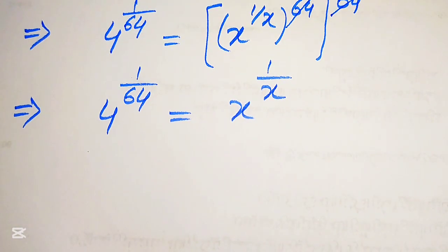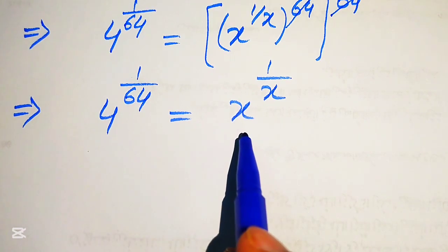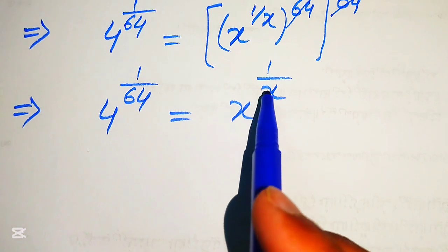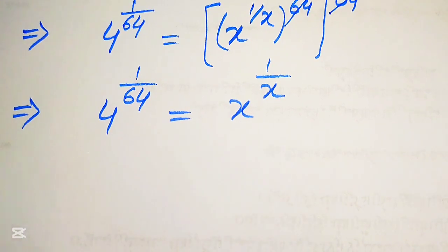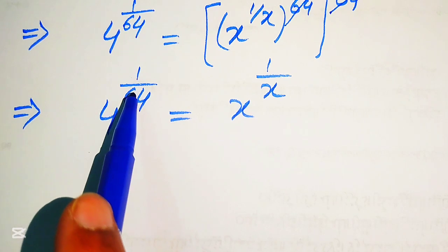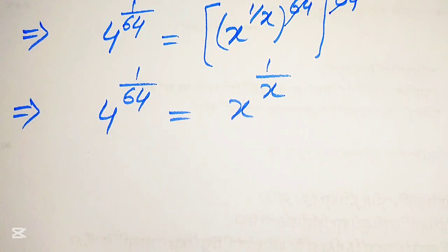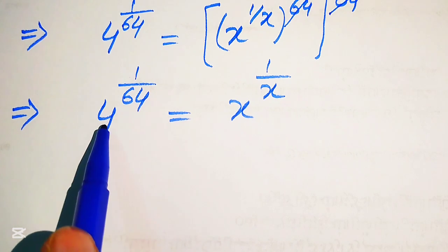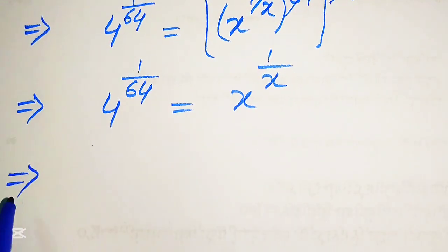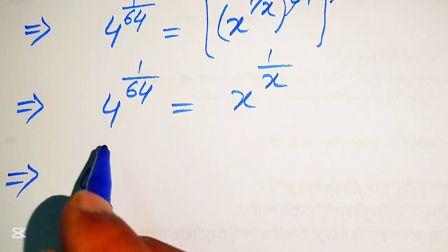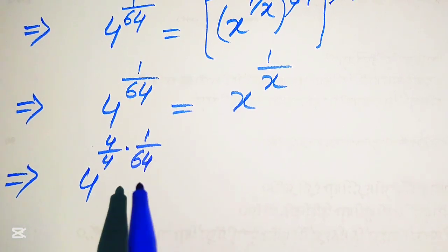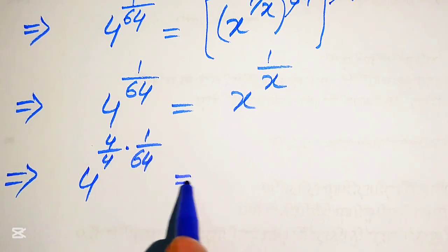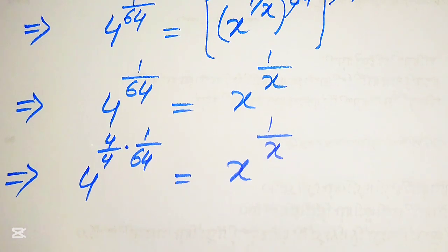Since we are solving for x, we notice that on the right hand side the exponent of the term is the reciprocal of its base. We need to make the same condition on the left hand side — the exponent should be the reciprocal of the base. For this, we multiply and divide the exponent by 4, so it is written as 4 to the power of 4 divided by 4, multiplied by 1 over 64, equals to x to the power of 1 over x.